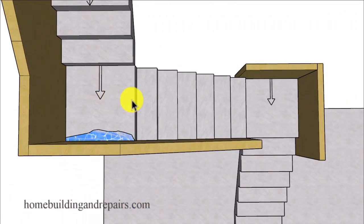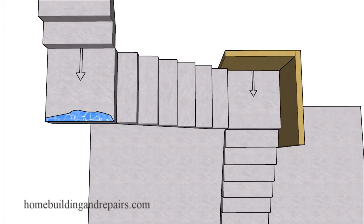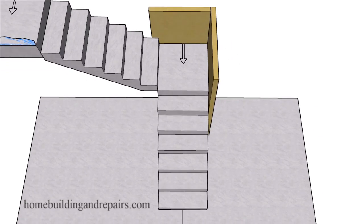So if we slope this one here in this direction, the water is going to roll down the stairway. This one is sloping in this direction. It's going to come down and then down to the bottom and hopefully not accumulate in any part of the stairway.